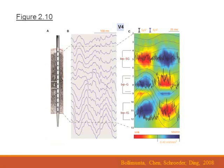This is Figure 2.10. In panel A, we see a schematic of the multi-contact electrode. Each one of these black dots is a recording contact. Together, we can simultaneously study neuronal activities across all six cortical layers in a cortical column.